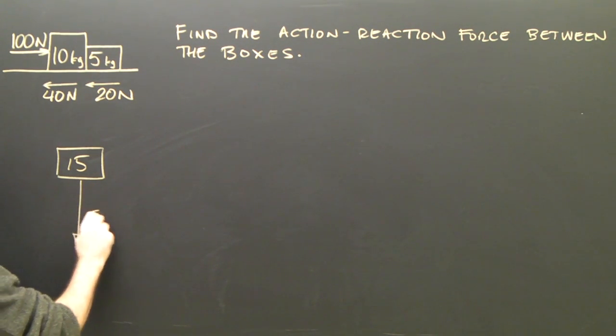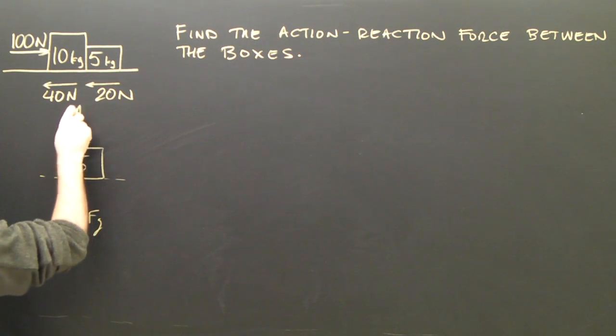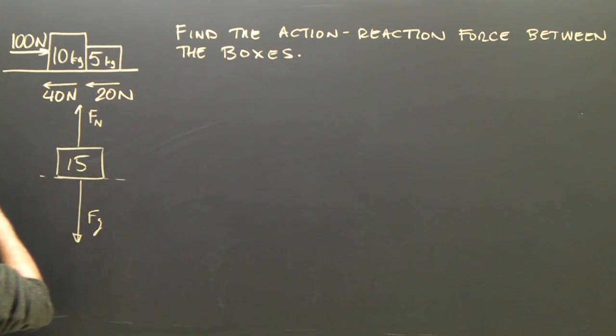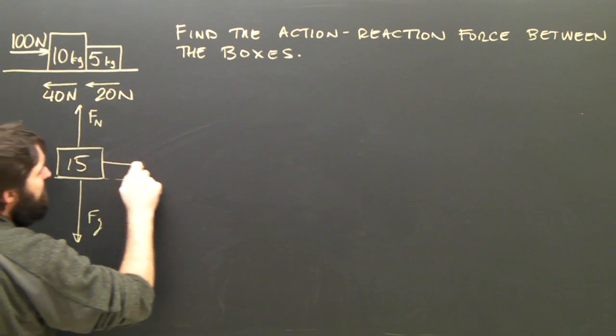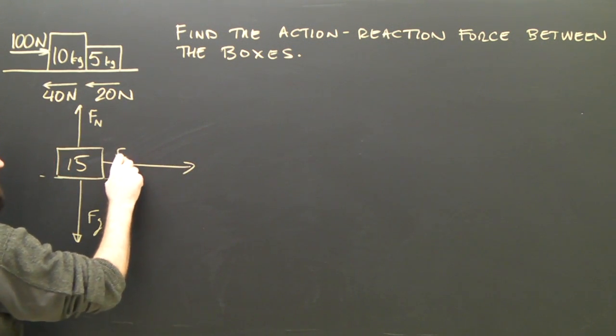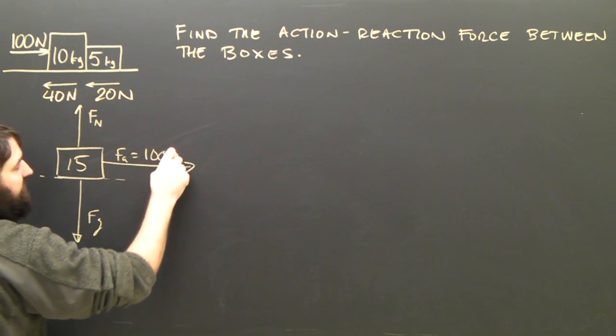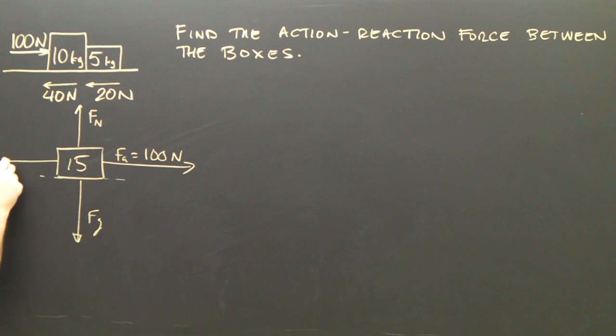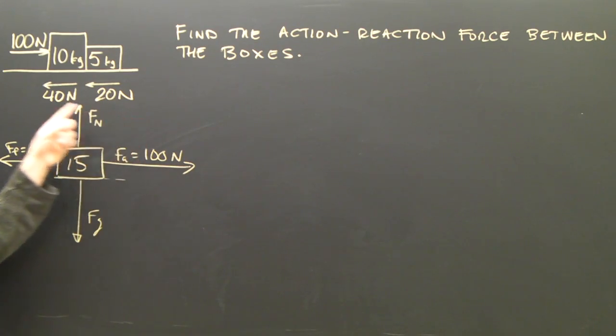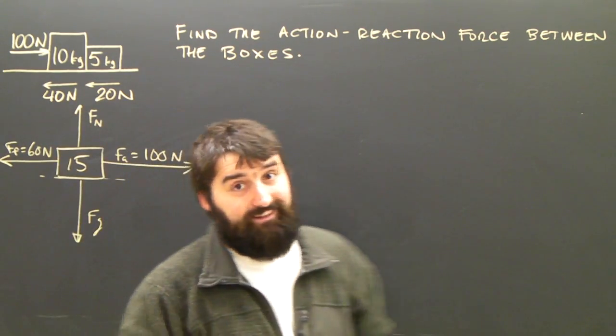Is there gravity? Of course there is. It's resting on the ground, so there's a normal force, Fn. There's an applied force to the right, which I will call Fa, which is 100 Newtons. And the total friction acting to the left is 60 Newtons - 20 from the 5 kilogram box and 40 from the 10 kilogram box.